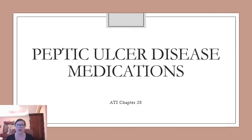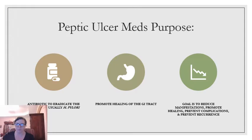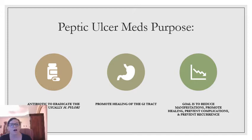The first group of GI medications we're going to cover are peptic ulcer disease medications from ATI Chapter 28. The purpose of these medications are either an antibiotic to treat an infection causing ulcerations — usually due to H. pylori — or to promote healing in the GI tract. The goal is to reduce manifestations of ulcer symptoms, promote healing, prevent complications, and prevent recurrence.